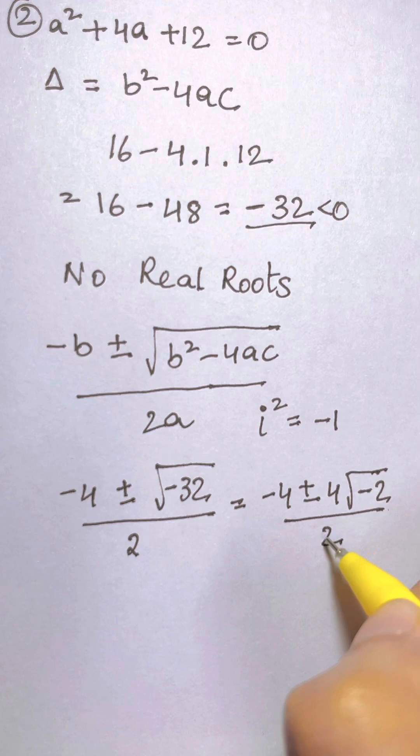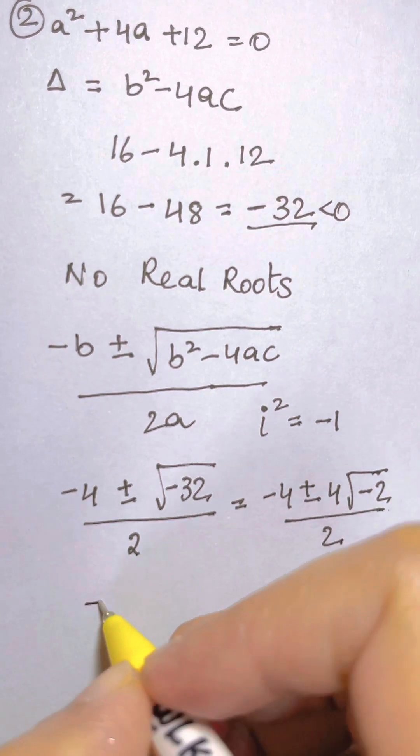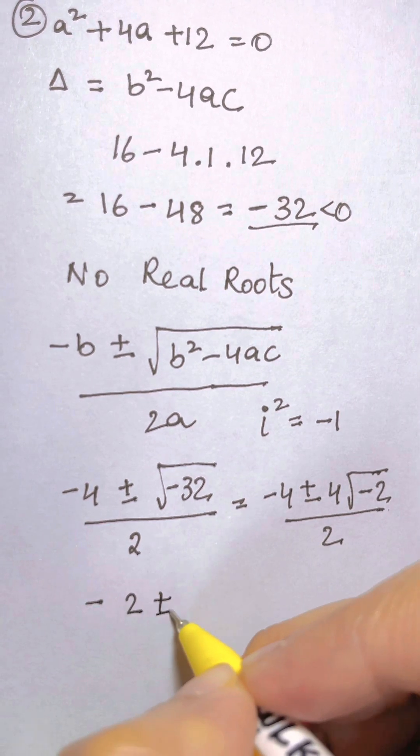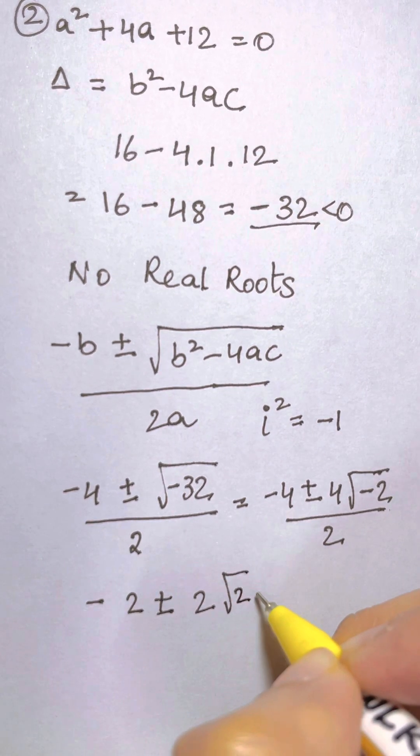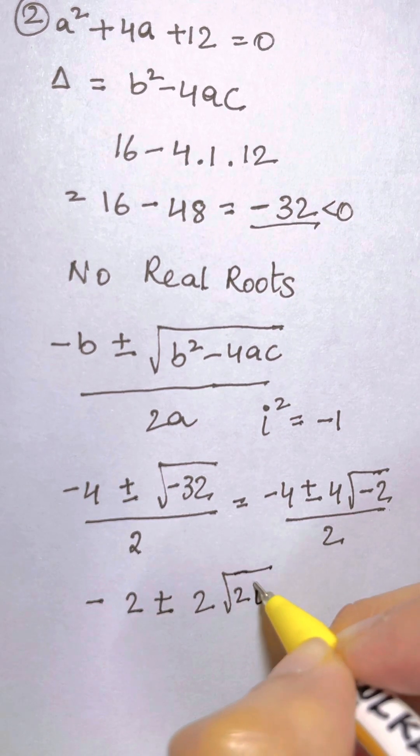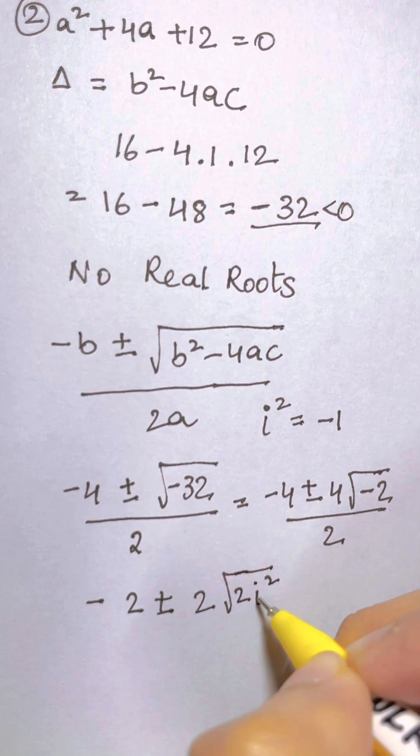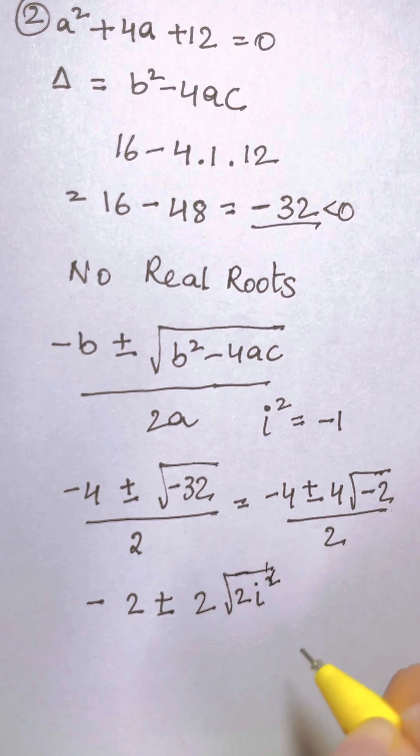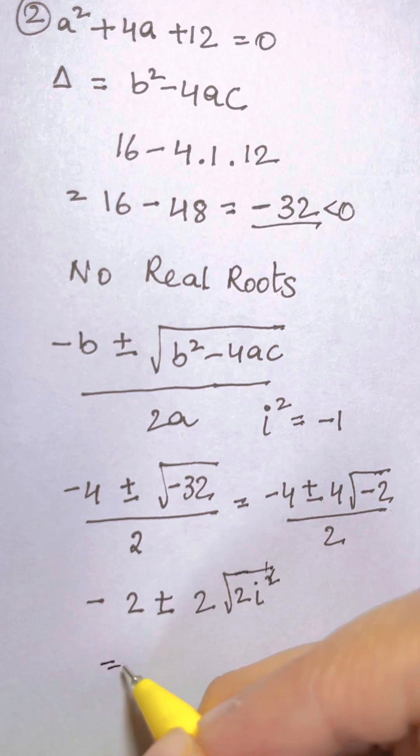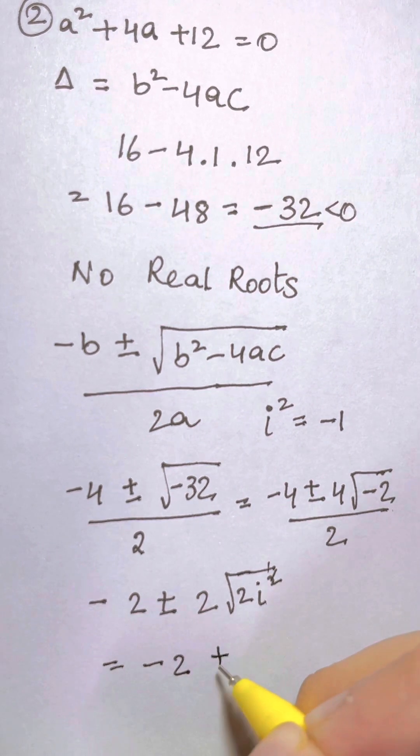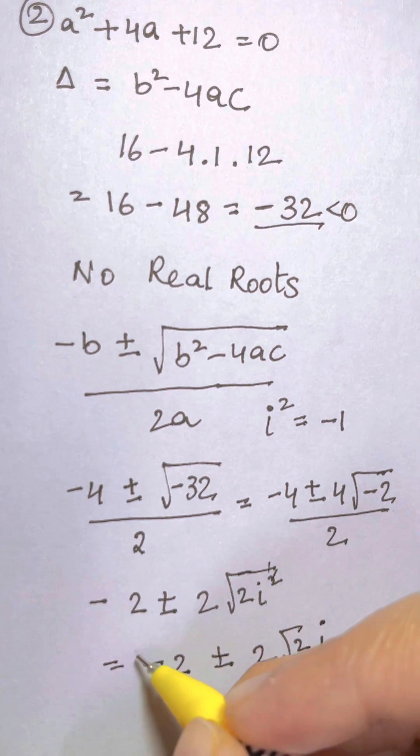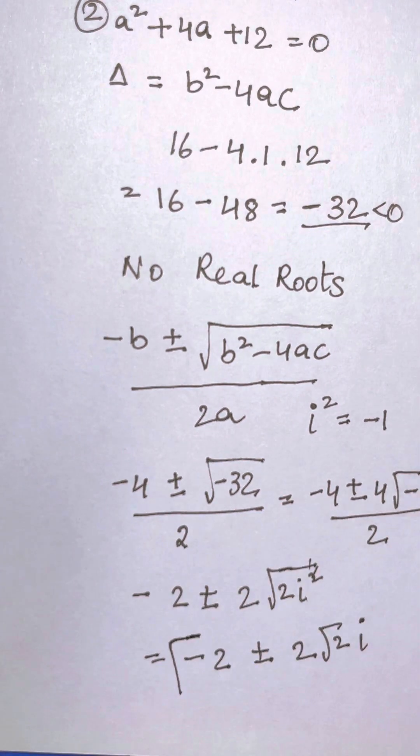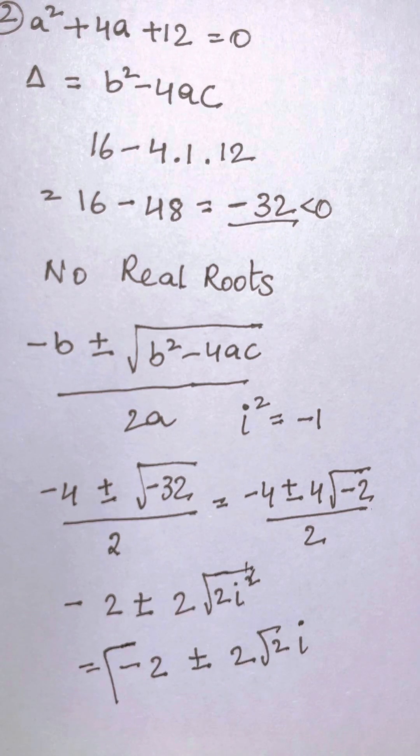Now what do I have if I cancel out 2s? I have -2 ± 2√2 i. i² is -1, so square and root that gets cancelled. So you are left with -2 ± 2√2 i. Those are the two complex solutions which you have.